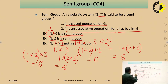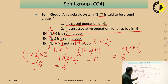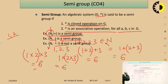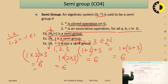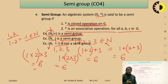The next example is (N, −). N is the set of natural numbers and minus is the binary operation. It is NOT a semi-group because it does not hold the closure operation. For example, take 1 and 2: 1 − 2 = −1, and −1 is not an element of the natural numbers. So this is not a closure operation, and therefore (N, −) is not a semi-group.